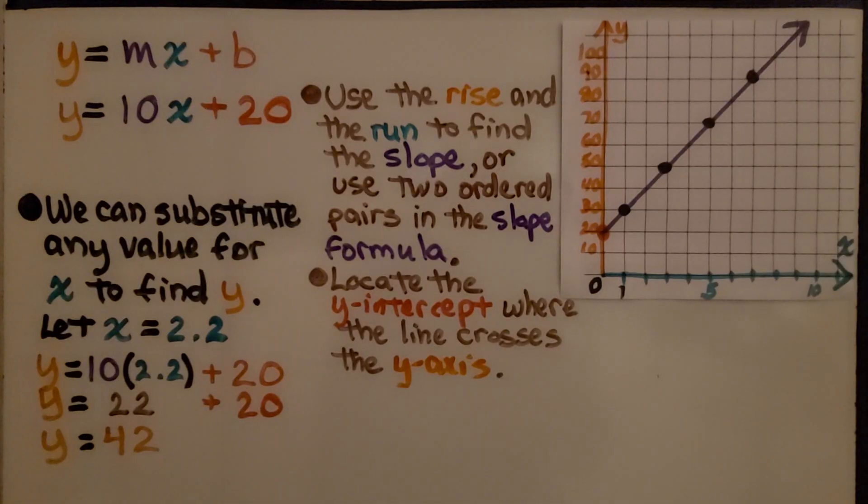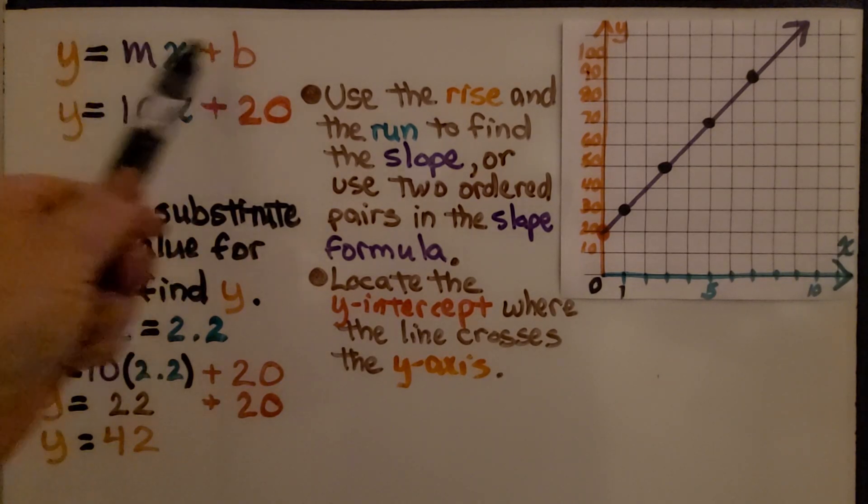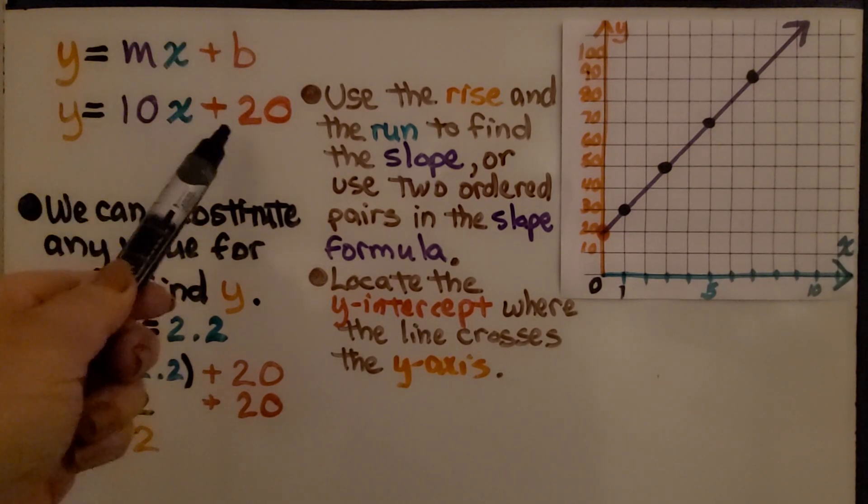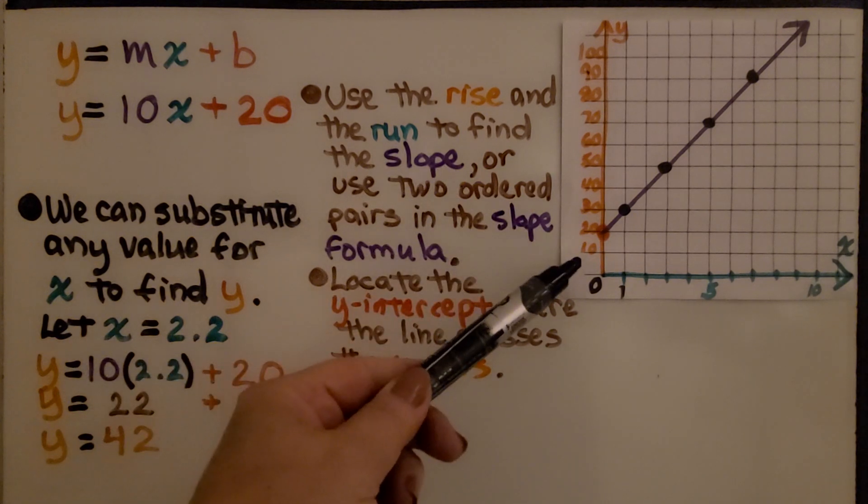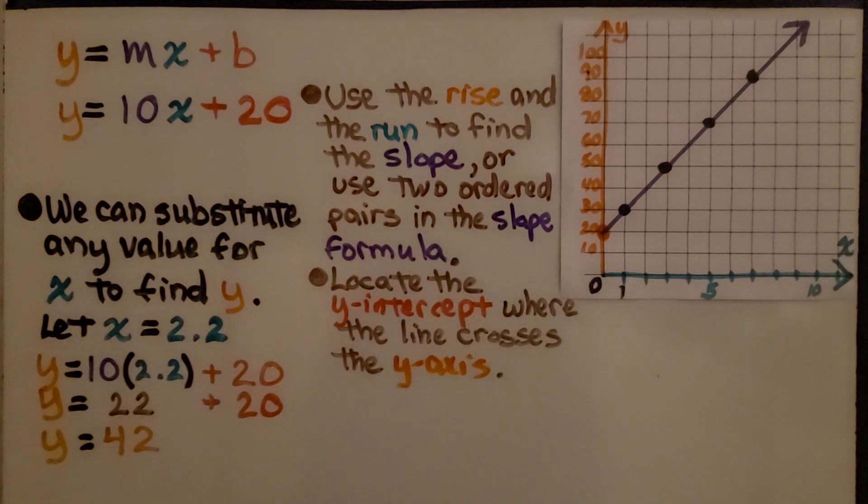Here's a real quick example. We have our equation in slope-intercept form and we write our equation. We look at this graph, this is the given graph, and we use the rise and the run to find the slope. That's the fast way.